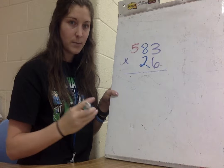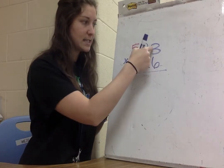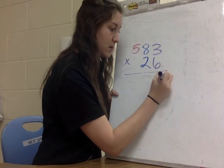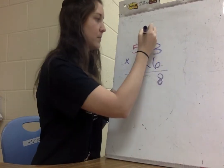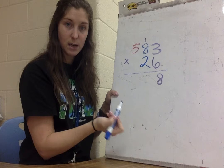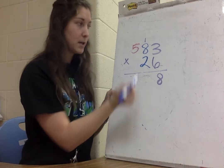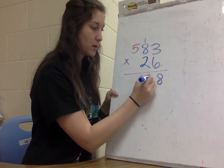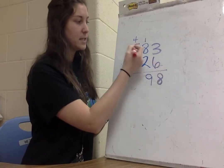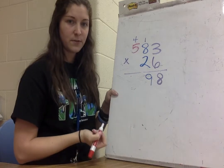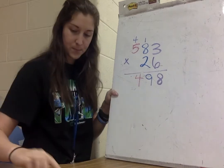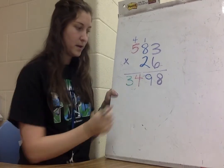The first thing I do is start again with my 6 times 3, which is 18 — put the 8 down, carry the 1 up. Then 6 times 8 is 48, plus 1 is 49 — put my 9 down, carry my 4 up. Then 6 times 5 is 30, plus 4 is 34. So I have 3,498 as my first partial product.